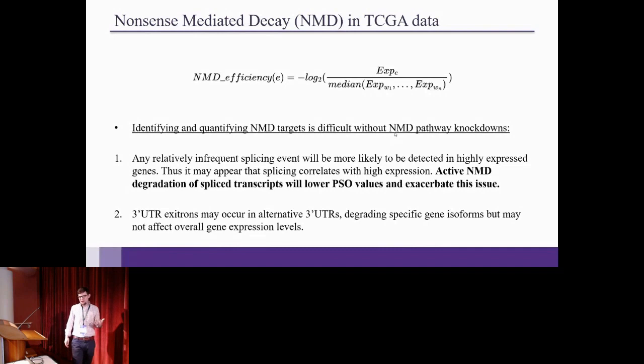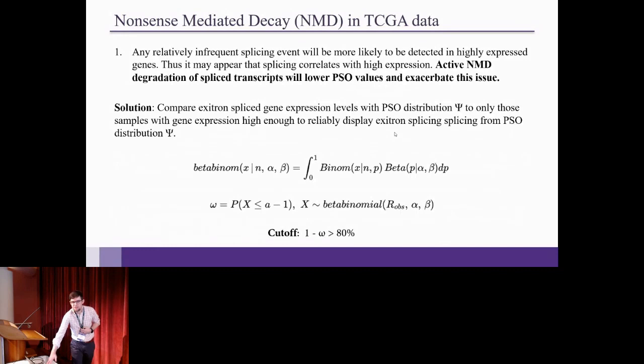The other problem is that 3' UTR exotrons may occur in alternative 3' UTRs and degrade specific isoforms. So to get around the first issue, we do a little statistical modeling. And I'm not going to go through it for the sake of time. But basically, we use the beta binomial model to model exotron spliced reads. And we calculate this omega value. And it basically is the probability of not observing the exotron. So that one minus omega is basically the sensitivity of the detection of the exotron. And so when we do NMD efficiency, we compare the spliced transcripts to those transcripts where you could have detected the exotron at some sensitivity. And here it's 80%.